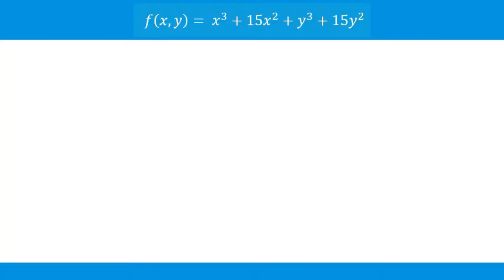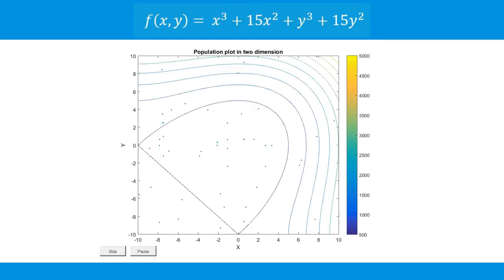Let's observe the progress of a genetic algorithm on the function f of x is equal to x cubed plus 15x squared plus y cubed plus 15y squared. Here is a two-dimensional contour plot of that function with an initial population plotted. The minimum of this function is x equals 0, y equals 0. Let's watch as the population evolves over time, moving closer and closer to the minimum point. Eventually we see that the genetic algorithm converges the population to the minimum.